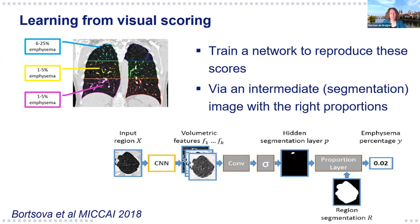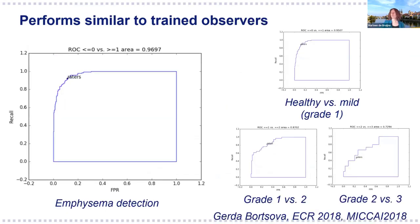We have essentially a standard regression network that regresses to the visual score, but with a hidden segmentation layer that must highlight a certain percentage of the lung field. So this method predicts visual scores but also provides a segmentation. The model performs very well—it predicts visual scores very similarly to trained observers, as you can see in the ROC curves. For some cases, whether it is grade two or grade three emphysema—roughly whether a region is 10 to 20% or 20 to 30% affected—humans are just not very good at eyeballing that, and our model trained on human visual scores is similar to humans but not much better.